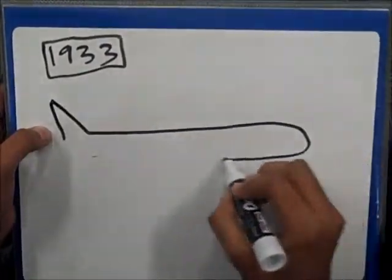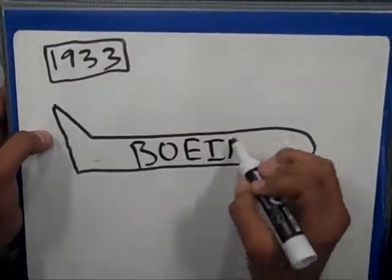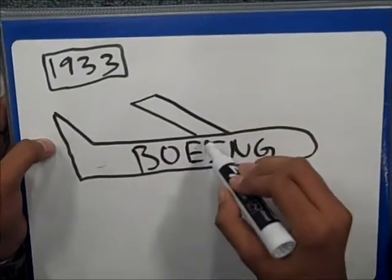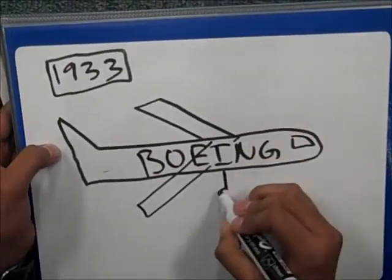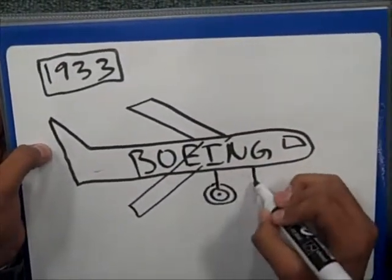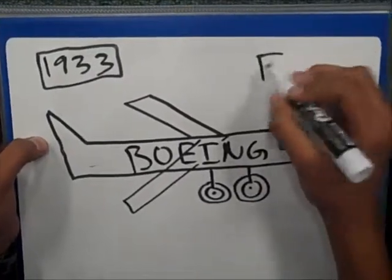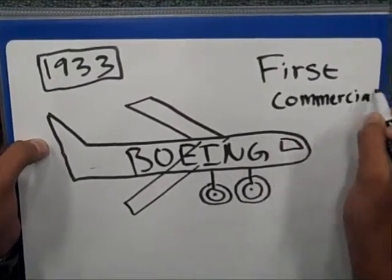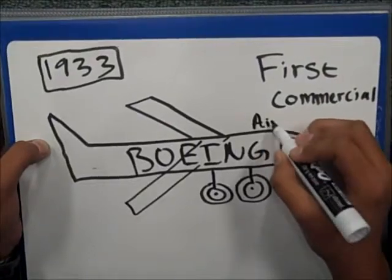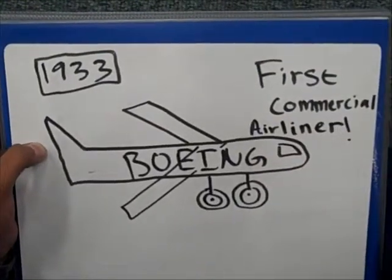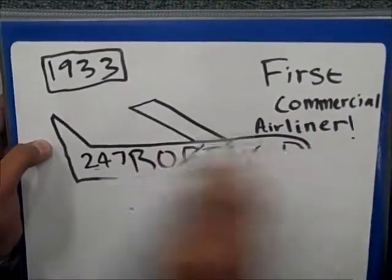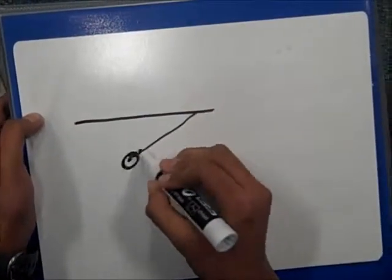The Boeing 247 was the first commercial airplane. The plane had a retractable landing gear. This reduced drag.